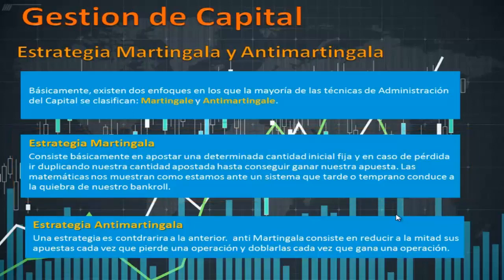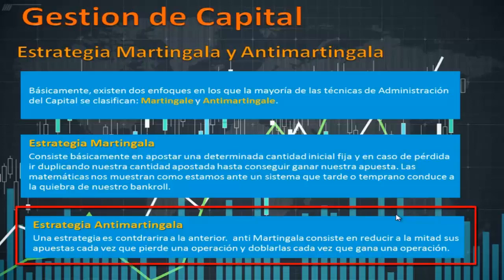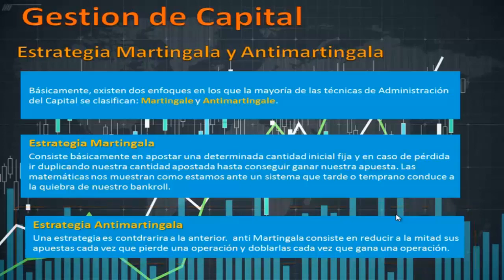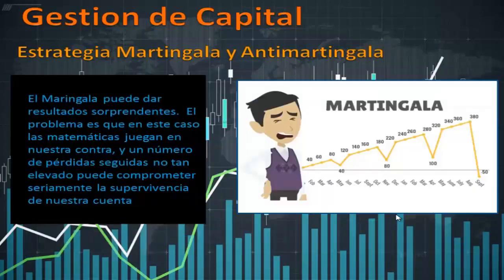La estrategia anti-martingala es lo opuesto a la estrategia martingala. Cuando pierdes, apuestas la mitad de lo que has perdido, o apuestas menos. La anti-martingala consiste en reducir a la mitad sus apuestas cada vez que pierde una operación y doblar cada vez que gana. Solamente cuando ganas doblas la operación, y cuando pierdes reduces a la mitad. Si tienes varias pérdidas consecutivas, la mitad de lo que pierdes va a ser siempre la mitad de lo que has perdido. Por tanto, la posibilidad de que pierdas tu dinero se va amortiguando en el tiempo.